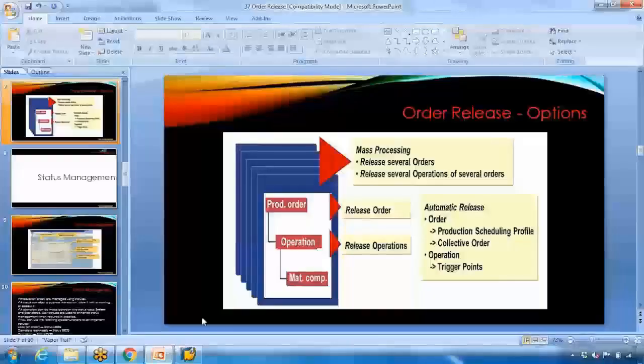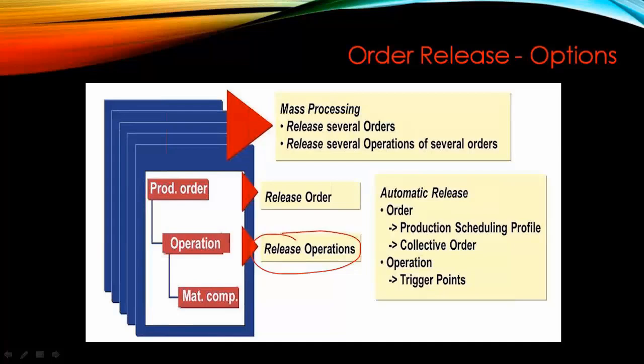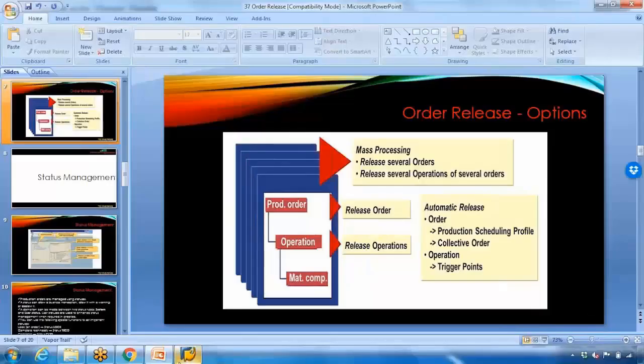There is another option: release at the operation level. You can also release an individual operation within the production order. If a production order has more than one operation for a work center, you can say you want to release only the first operation — meaning the first operation can be executed and processed with the next steps, while the second operation cannot yet be processed.